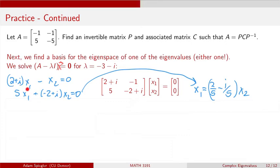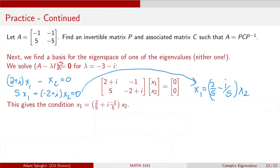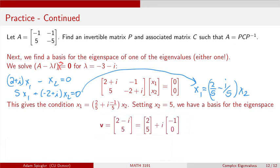The first equation is: the quantity 2 plus i times x1 minus x2 equals zero. The second equation is: 5 times x1 plus the quantity minus 2 plus i times x2 equals zero. Because lambda equals minus 3 minus i is an eigenvalue, these two equations should be redundant — one should be a multiple of the other. Picking the second equation and solving for x1, we get that x1 equals the quantity 2 fifths minus i over 5 times x2.